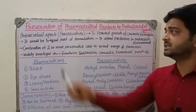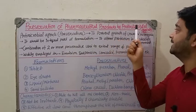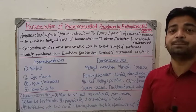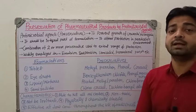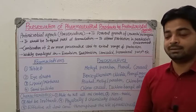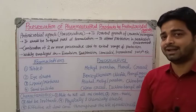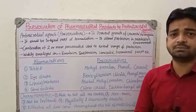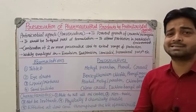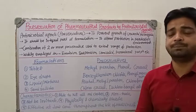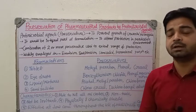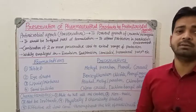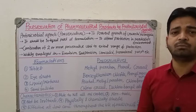We are going to discuss the preservation of pharmaceutical products by antimicrobial agents. We use antimicrobial agents as preservatives in pharmaceutical products to preserve them for a long time until expiry. This is similar to what we do with food — for example, adding turmeric powder, salt, and sufficient oil to pickles to preserve them. Preservatives play a major role in both food and pharmaceutical formulations.